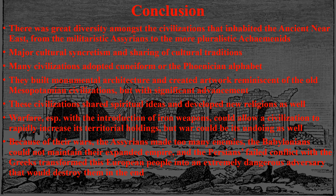Conclusion. Once again, we've covered a lot of ground in this video — well over a millennium of time and multiple civilizations. What I hoped you saw was that there's great diversity amongst the civilizations that inhabited the ancient Near East, from the militaristic Assyrians to the more pluralistic Achaemenids. There was major cultural syncretism and sharing of cultural traditions even within this diversity. For example, many of the civilizations adopted cuneiform or the Phoenician alphabet. These civilizations also built monumental architecture and created artwork reminiscent of the old Mesopotamian civilizations, but they made their own unique advancements and modifications.